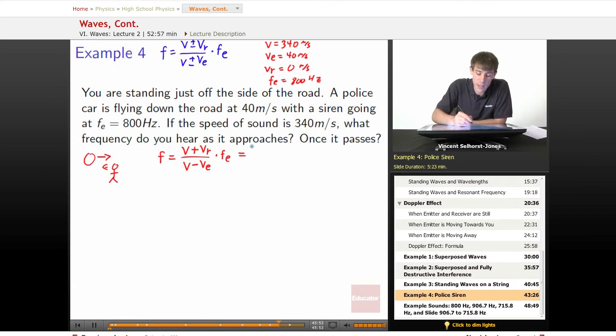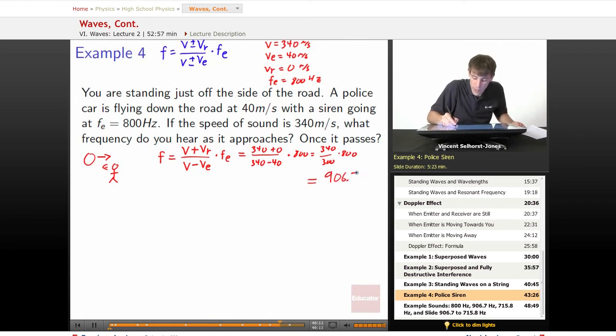We've got v, so 340, your speed is 0, divided by 340, its speed is 40, times 800. 340 over 300 times 800, we've got 906.7 hertz. Great. So that's what you'll hear as it moves towards you.